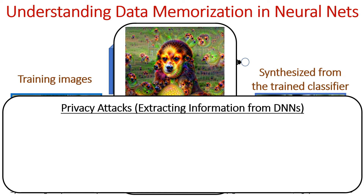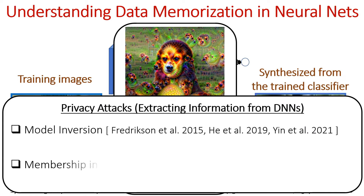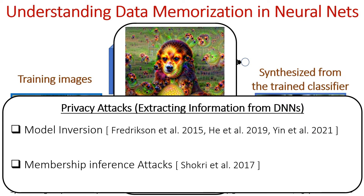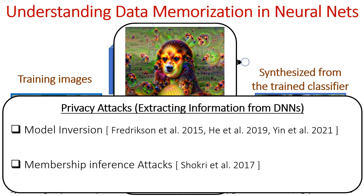This is studied from the perspective of privacy, where various attacks try to extract sensitive information from a trained model, like model inversion or membership inference. These usually assume a restricted setup — few samples per class, knowledge of gradients, or knowledge of specific training samples.